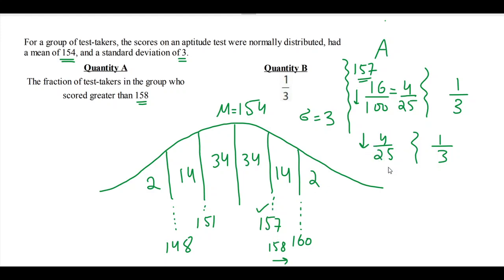Let's see this fraction. Because I'm considering more area for 157, 158 is gonna be a bit lower. So if I'm just using my calculator over here, 4 divided by 25 is 0.16, and 1 divided by 3 is basically 0.33.